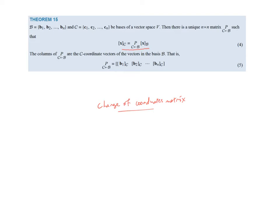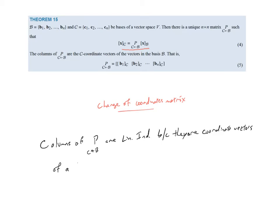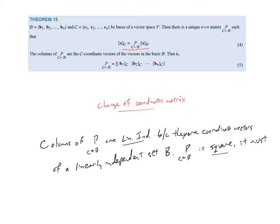The columns of P from b into c are linearly independent because they are coordinate vectors of a linearly independent set — the linearly independent set b. Also, the change matrix P from b into c is square. The columns are linearly independent and the matrix is square — so what does that mean? It must be invertible.